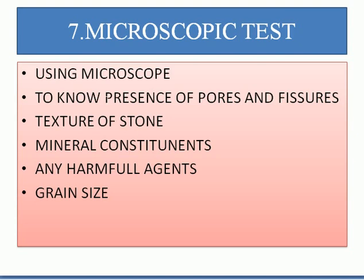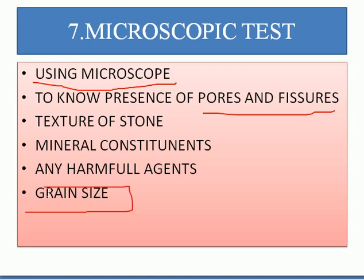Next is the microscopic test. Using a microscope, we examine the stone to know the presence of pores and fissures, any particles or inclusions, the texture of the stone's surface, the mineral constituents, any harmful agents, and the grain size. This is a semi-important test.